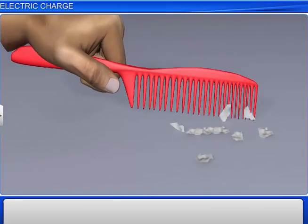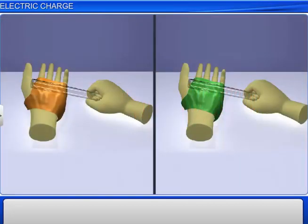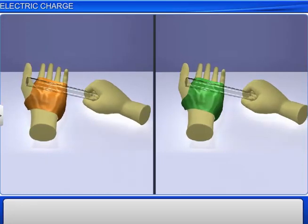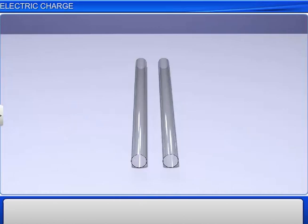When two pieces of silk cloth are rubbed against two glass rods individually, and the glass rods are kept beside each other, the glass rods repel each other.